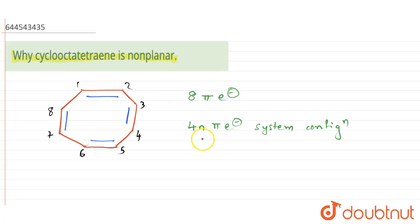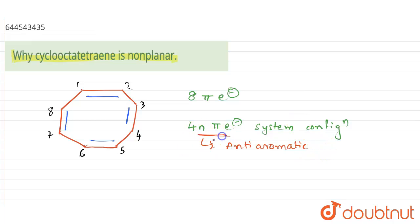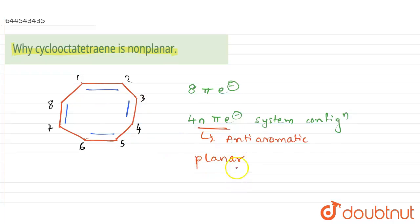The 4n pi electron system means it is an anti-aromatic compound. If it had followed the 4n+2 pi electron system, it would have been an aromatic compound. But it is following the 4n pi electron system where the n value is two, so it is an anti-aromatic compound, which in its base form is a planar molecule.